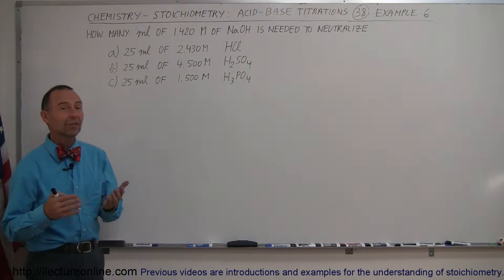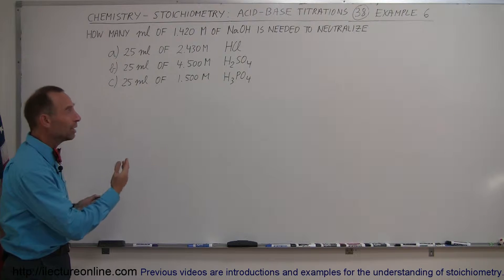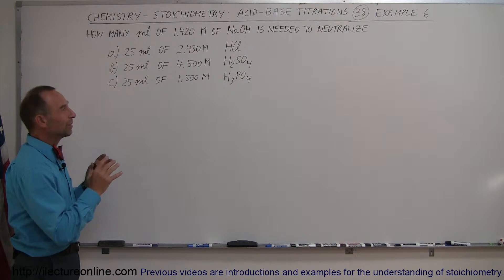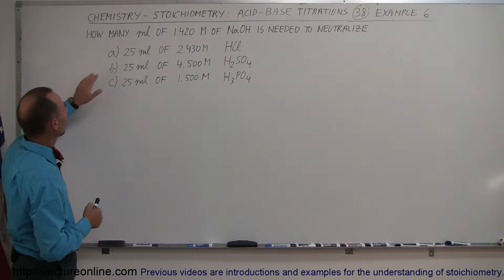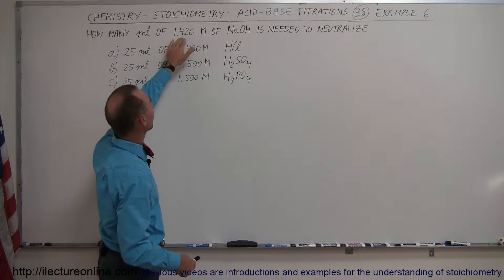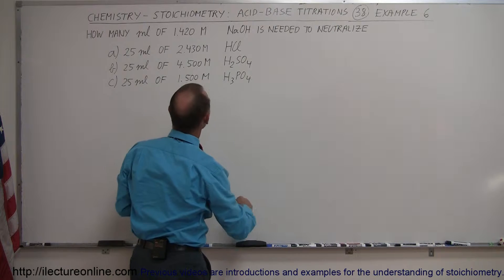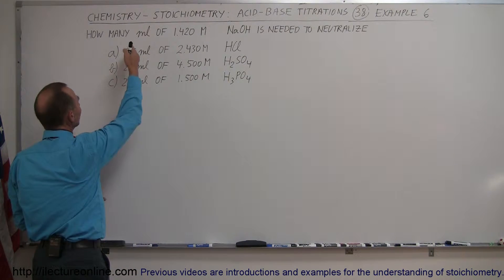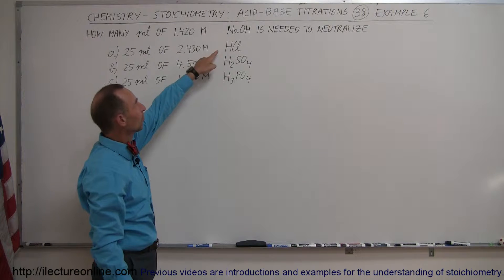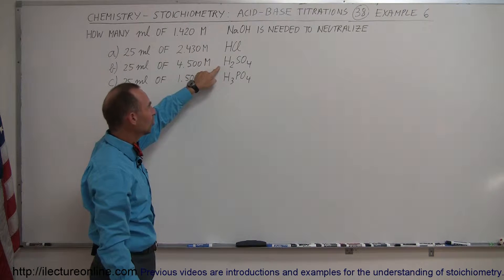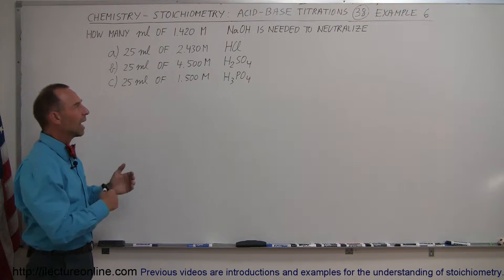Here's another example of how to do acid-base titrations. This example is specifically set up so you can see how when we have acids that produce a different quantity of hydrogen ions when placed in solution, how that affects the way in which we try to neutralize them. We're asked how many milliliters of 1.42 molar sodium hydroxide is needed to neutralize 25 mL solutions of three different acids. Each acid produces one, two, or three hydrogen ions per molecule, and this will illustrate how we deal with that.